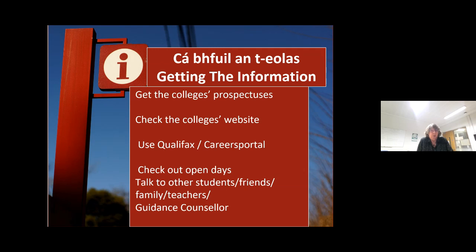Where do you get the information for all of the courses? Every single college in the country has what they call a prospectus — it's a booklet with all of the information about all of the courses, but not just the courses, but all of the activities and extracurricular activities available for all students while in college, so that it makes it a very enjoyable experience for them. You can also go on to all the college websites online. There are two very, very good specific websites which are Qualifax and Careers Portal, where they have all of the information that your son or daughter will need when they're doing the research.